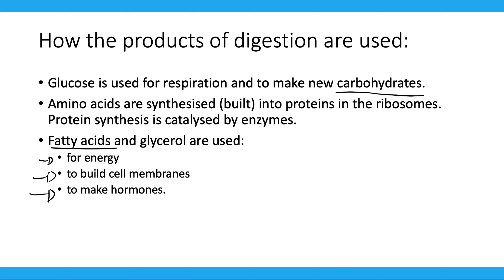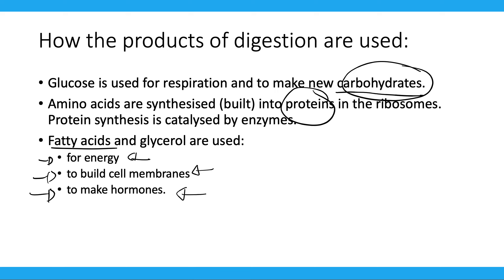Glucose produces carbohydrates. Amino acids produce proteins. Fatty acids and glycerol give us energy, build our membranes, and make our hormones.